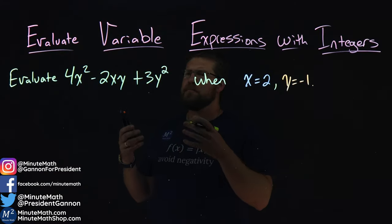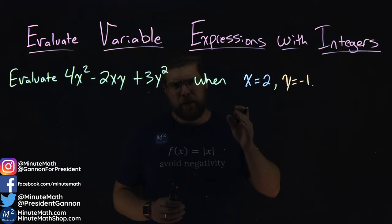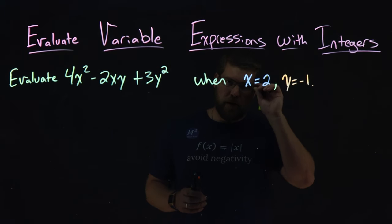We're given this problem here to learn about this. Evaluate 4x squared minus 2xy plus 3y squared when x equals 2 and y equals negative 1.